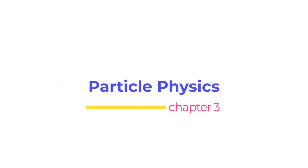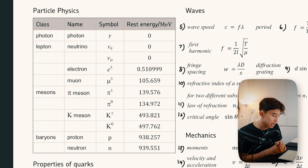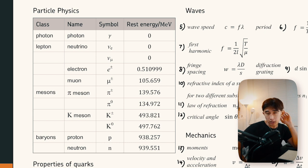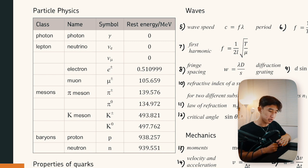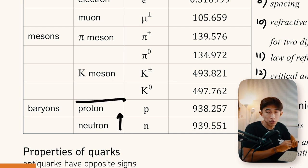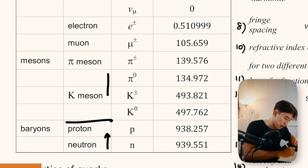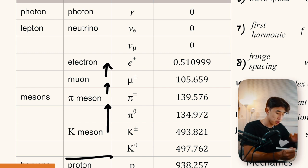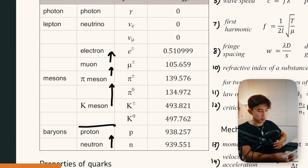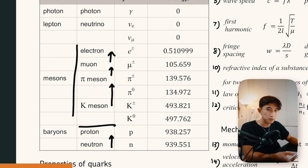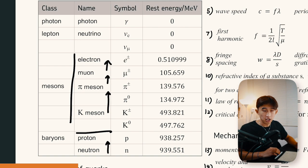There's a secret hidden trick within the particle classification table. If you're in doubt about what decays into what, this table tells you: for baryons, the neutron naturally decays into a proton as the most stable state. For mesons, a K meson decays into a pi meson, which decays into a muon, and a muon decays into an electron — the most stable form.